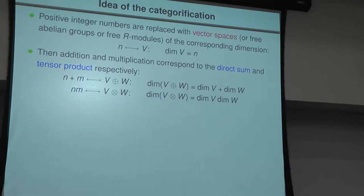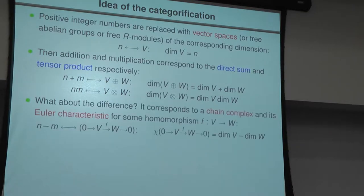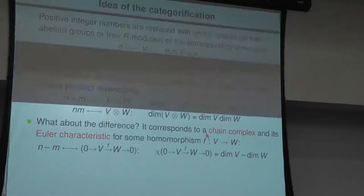Addition and multiplication are easy: instead of those you consider direct sum or tensor product over the corresponding ring. Difference is trickier — for difference, we use a chain complex instead, with some homomorphism between two vector spaces or free abelian groups, whatever the category looks like.